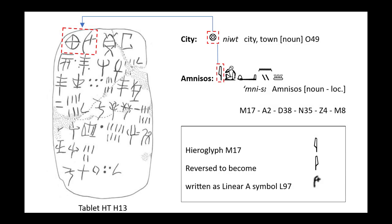First we have Amnissos. Amnissos was the port of the Minoan capital Knossos, and was the place name that Michael Ventris first noted in his decipherment of Linear B, helping him prove his theory. As a place of evident significance, we would expect it to appear in the Linear A records. Its first hieroglyph is reversed and in rather cursive form here, becoming Linear A symbol L97, used as the shorthand representation of the city's full name.